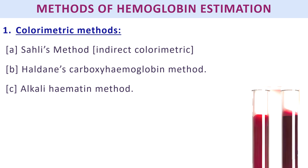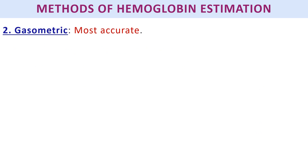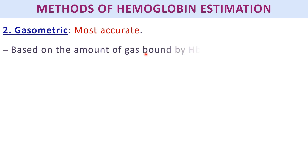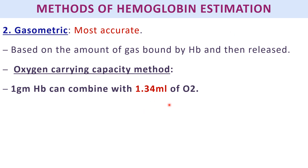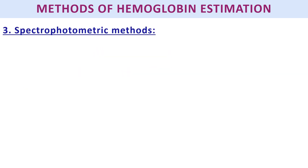Next is the gasometric method, which is the most accurate method of hemoglobin estimation. Its principle is based on the amount of gas bound by hemoglobin and then released. For example, we calculate the amount of oxygen present — since one gram of hemoglobin combines with 1.34 mL of oxygen — and from that we determine the hemoglobin content.